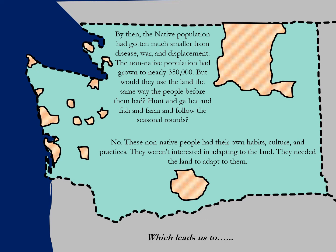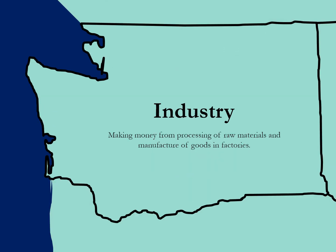So here they are — these non-native people who now basically own this land, the state of Washington. Are they going to use that land the same way the people before them had — hunt and gather, fish and farm, follow the seasonal rounds? Basically, no. These non-native people had their own habits, their own culture, their own practices. They were not interested in adapting to the land; they needed the land to adapt to them. Which leads us to industry — making money from processing raw materials and manufacturing goods in factories.